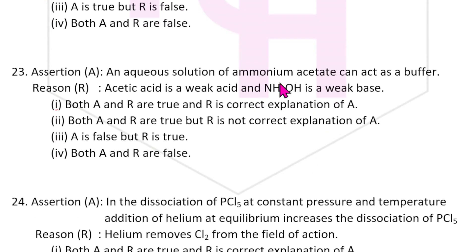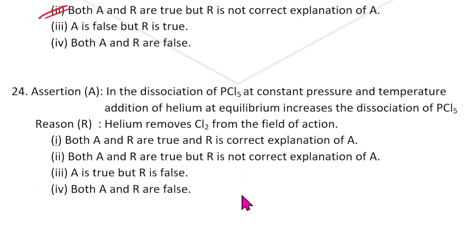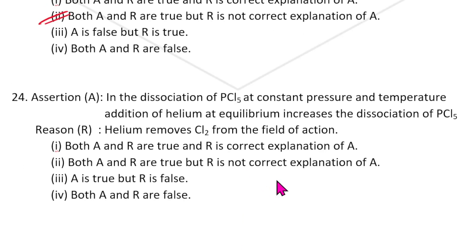Twenty-third question: An aqueous solution of ammonium acetate can act as a buffer — correct. Acetic acid is a weak acid and NH₄OH is a weak base — correct. However, the reason given is not correct as stated: it should say ammonium acetate is a salt of weak acid and weak base, not just state the individual components. The answer is B.